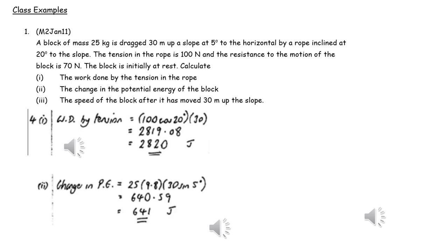To calculate the change of potential energy, it's mg times h, where h is the vertical distance risen, so here we've got 25 multiplied by the value of g, 9.8, multiplied by 30 sin 5 to get that vertical distance.